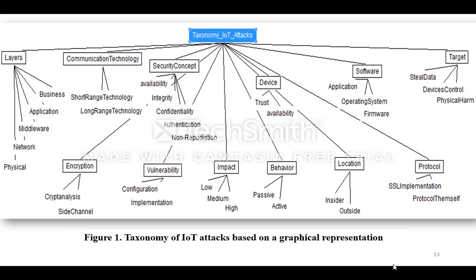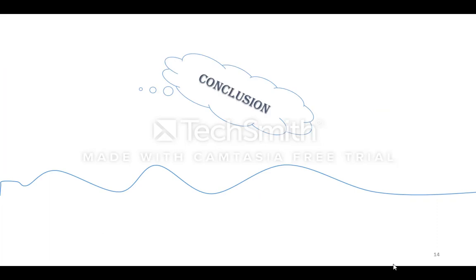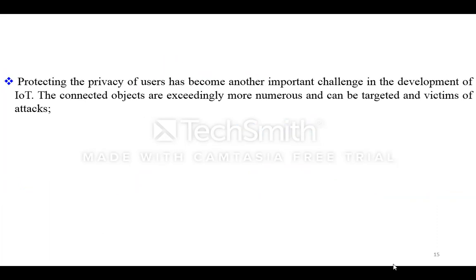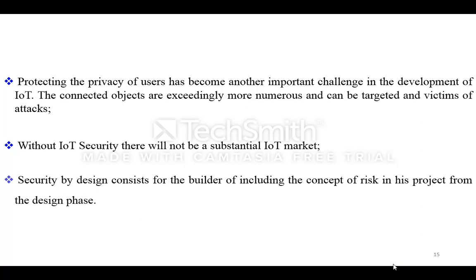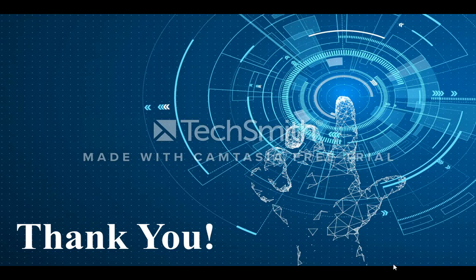This figure represents the taxonomy of IoT attacks based on a graphical representation. Conclusion: protecting the privacy of users has become another important challenge in the development of the IoT. The connected objects are more and more numerous and can be targeted as victims of attacks. Without IoT security, there will not be a substantial IoT market. Security by design consists of the builder including the concept of risk in his project from the design phase. Thank you for watching.